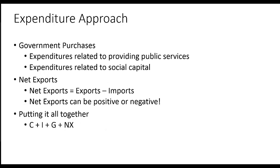Government purchases include expenditures by all levels of government — federal, state, and local. They're generally broken down into two categories: expenditures related to providing public services, such as public health programs, and expenditures related to social capital, such as schools and highways. Government purchases do not include government transfer payments because they're not related to current production.